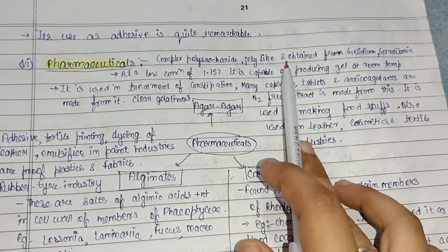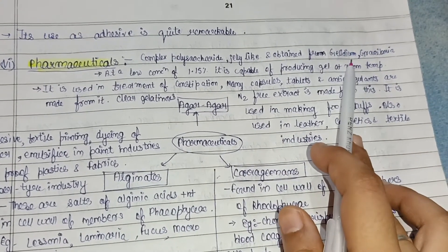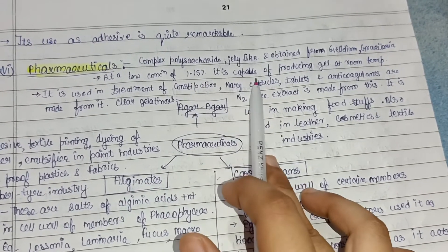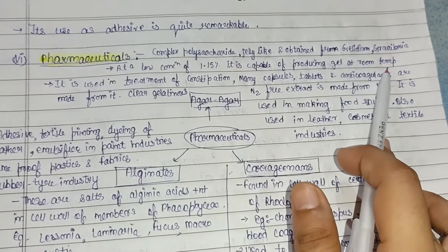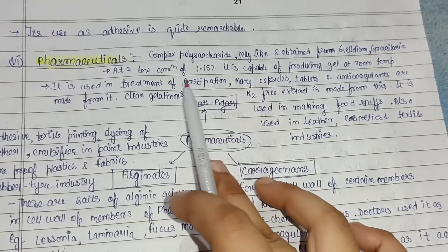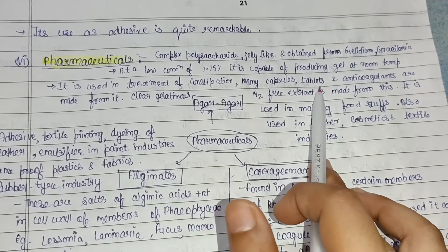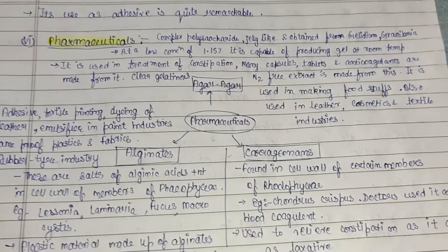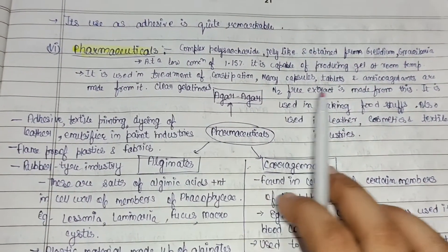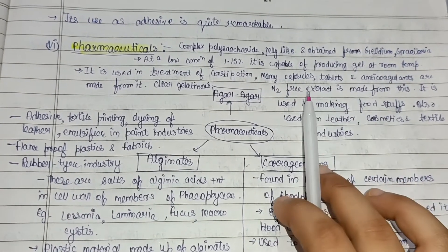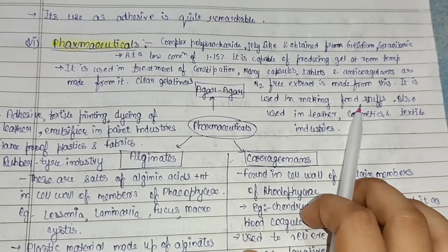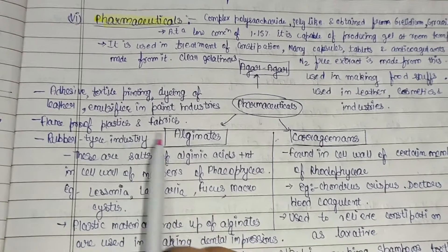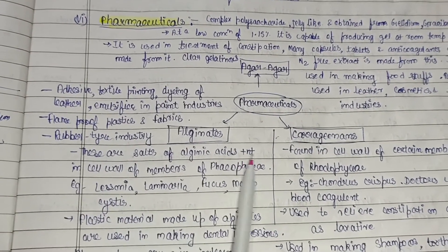Agar-agar is a complex polysaccharide and jelly-like substance obtained from Gelidium and Gracilaria species of algae. At a low concentration of 1.5%, it produces gel at room temperature. It is used in treatment of constipation; many capsules, tablets, and anticoagulants are made from it. A clear gelatinous nitrogen-free extract is used in making foodstuffs and in leather, cosmetics, and textile industries.